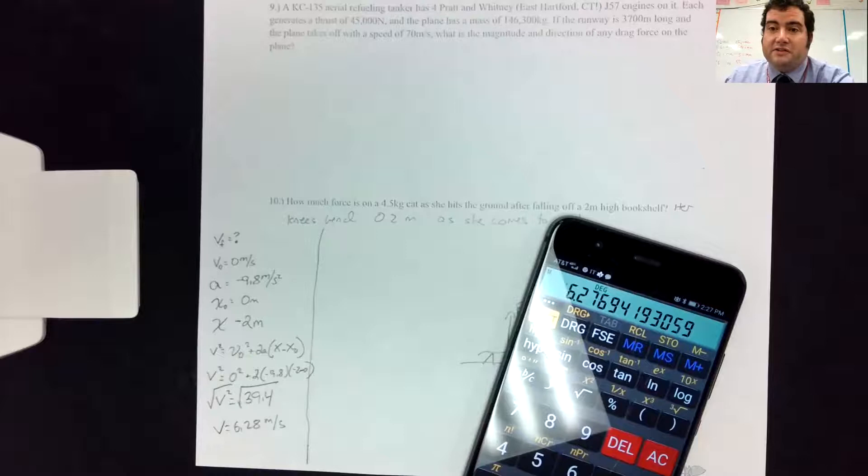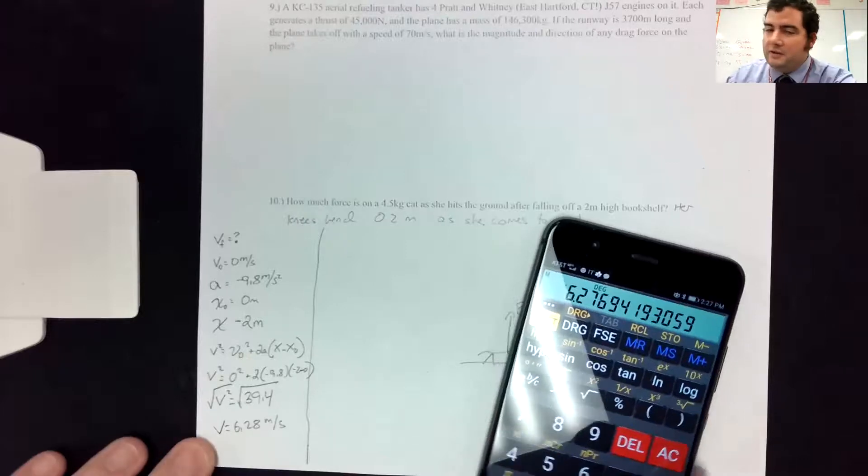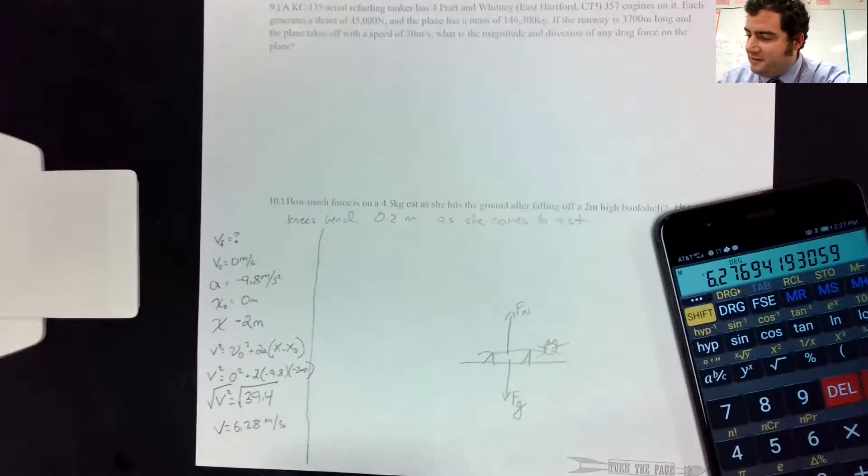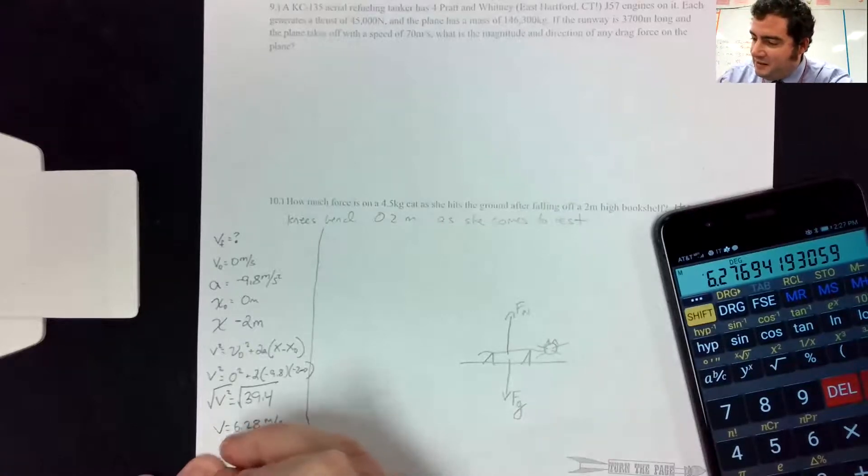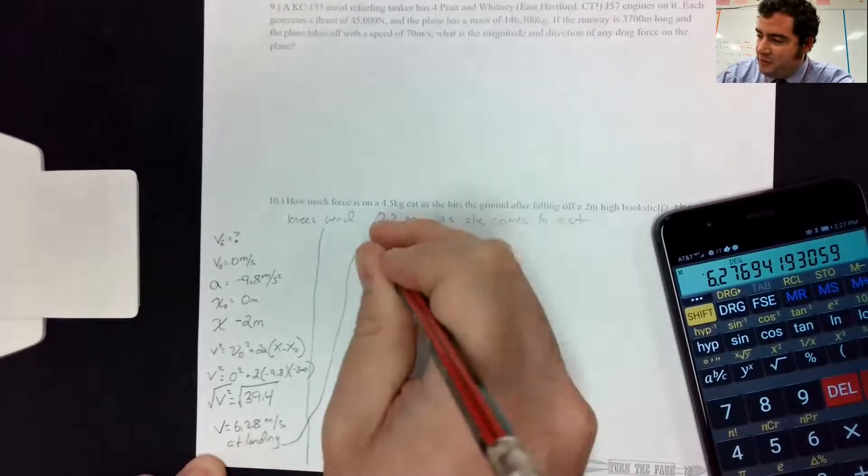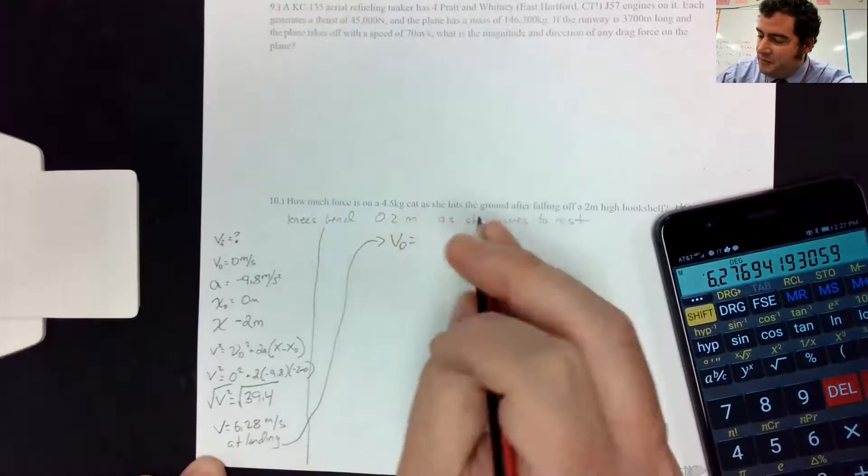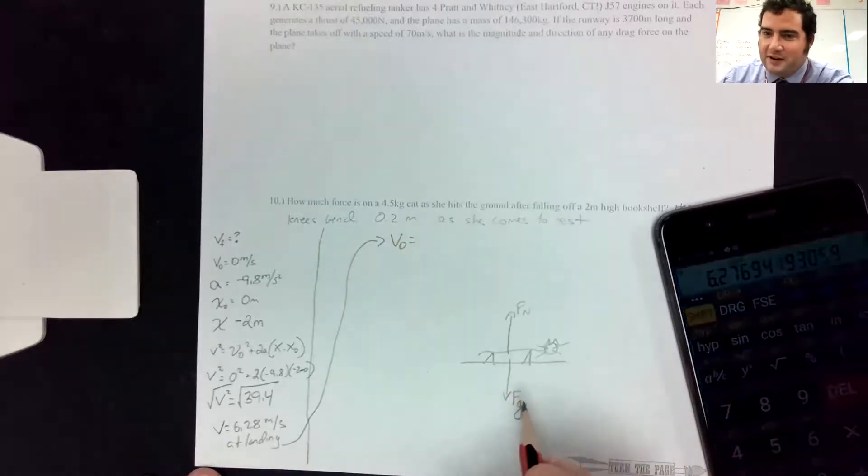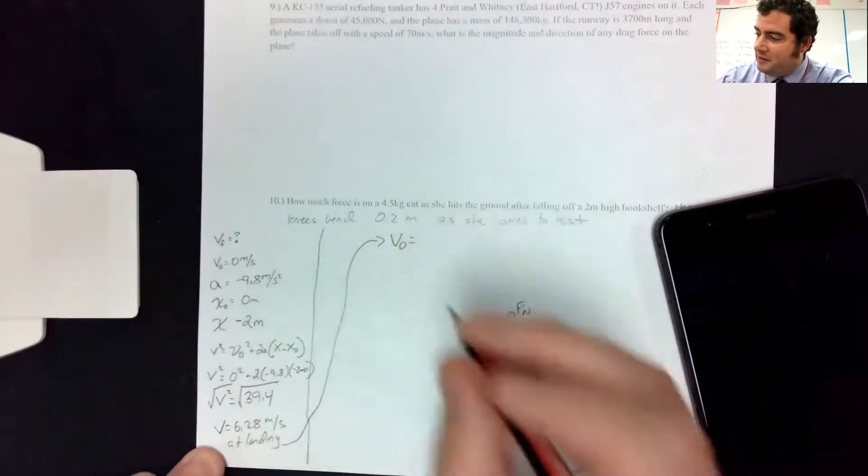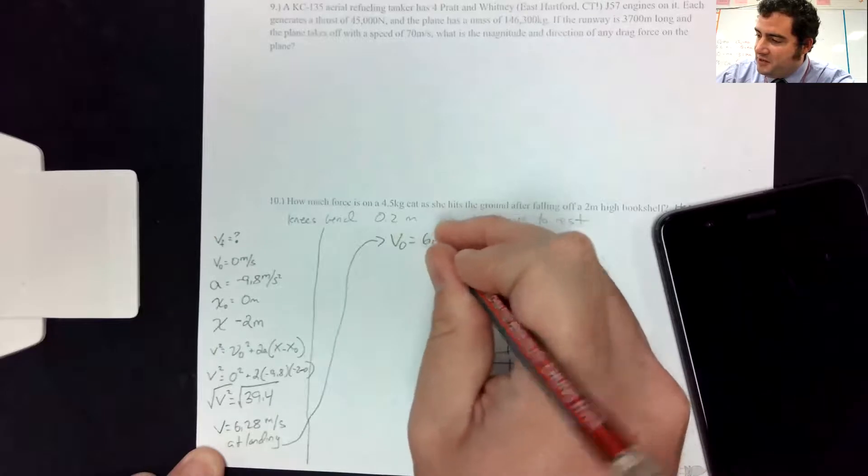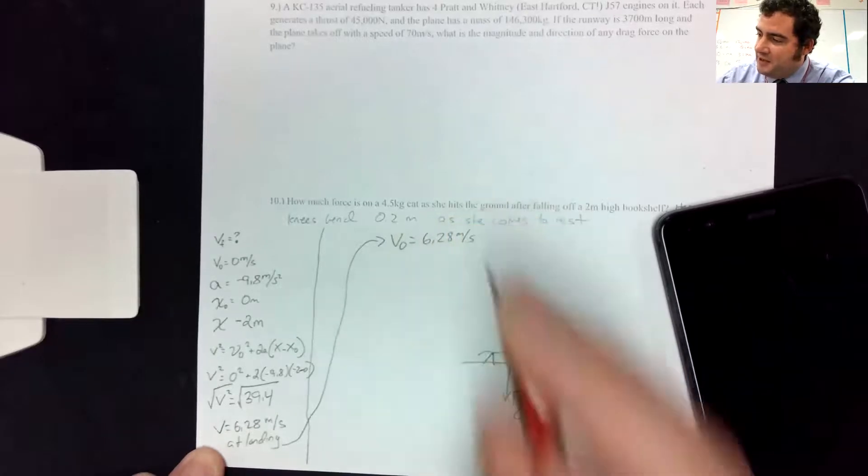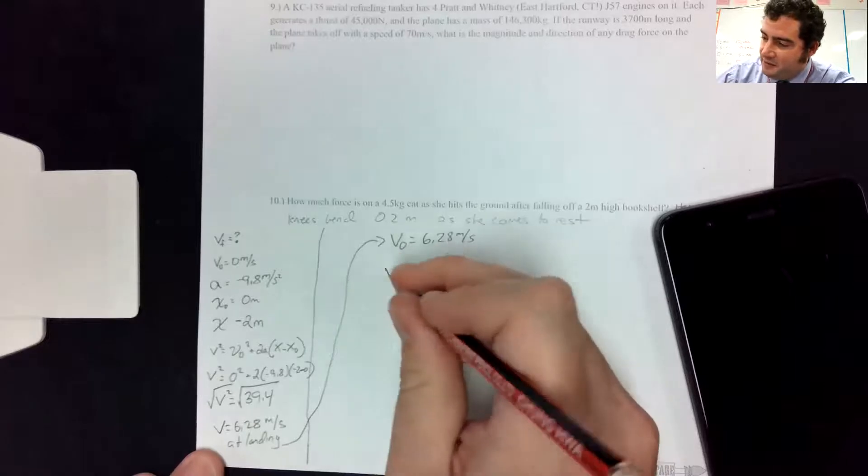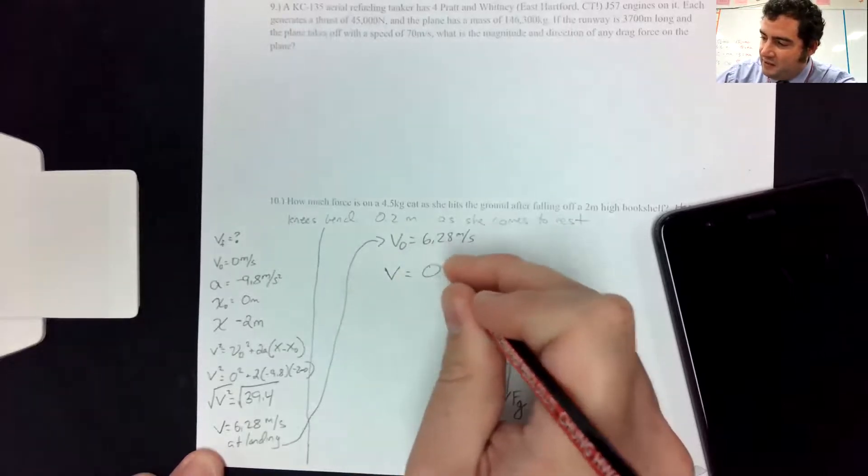So we get V is 6.28 meters per second. So that's how fast she's going when she's landing and when she hits the ground. So what we need to do now is this V becomes the V0 for this problem. Because in this problem, we're hitting the ground and stopping. So V0 is 6.28 meters per second.